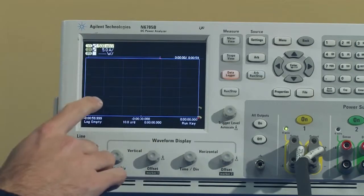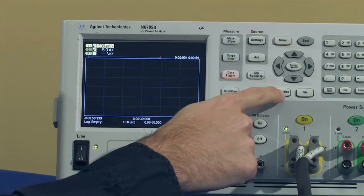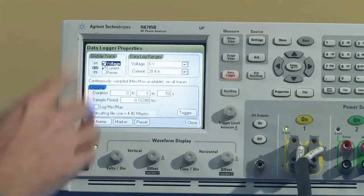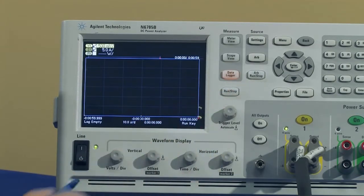So I have everything set up in the data logger. We're going to do a data log of 60 seconds, so that'll continually measure the voltage and the current for 60 seconds.